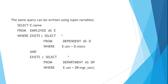The same query can be written using tuple variables. SELECT E.name FROM employee AS E WHERE EXISTS (SELECT * FROM dependent AS D WHERE E.SSN = D.ESSN) AND EXISTS (SELECT * FROM department AS dp WHERE E.SSN = dp.manager_SSN). You can represent the query either by using tuple variables or without tuple variables.